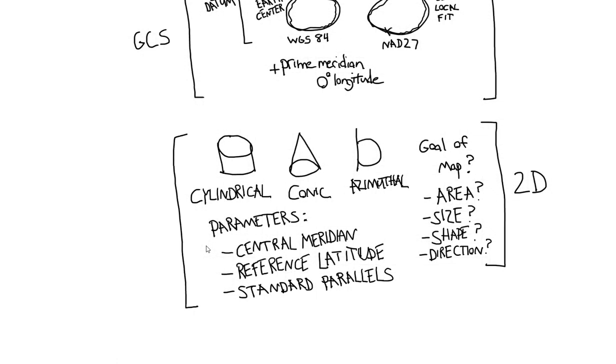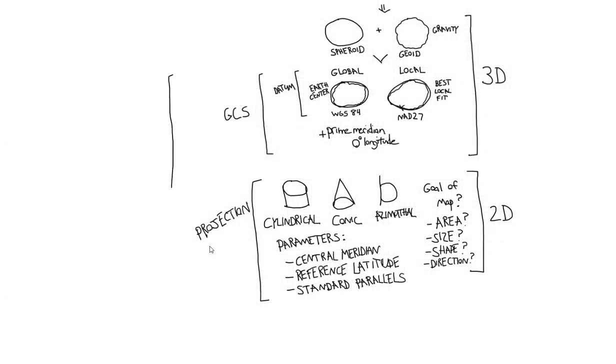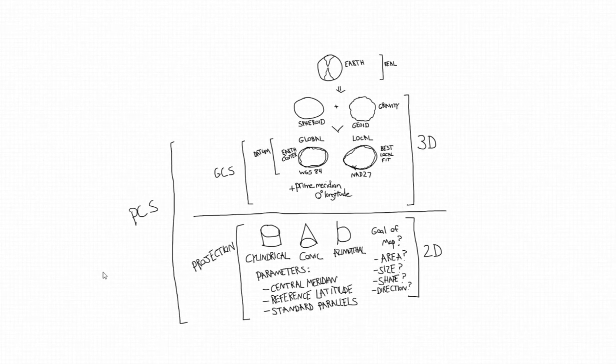So we've defined our projection, either cylindrical, conic, azimuthal, and have the parameters for where it is going to be represented in 2D space. So the geographic coordinate system plus this projection is called the projected coordinate system, or a PCS. The projection is that ability to take a 3D representation and then represent it on a 2D surface. The geographic coordinate system is that datum plus a couple other parameters. The datum is taking the spheroid and the geoid and combining those together.